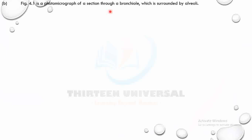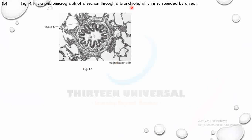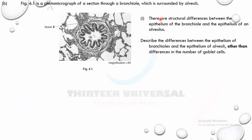Figure 4.1 is a photomicrograph of a section through a bronchiole with alveoli. You can see the bronchiole here with ciliated epithelium — the lumen is visible, the epithelium is folded, and there are loose tissues and mucus glands at the next layer. Structure X is visible in the wall of the bronchiole. Note that the bronchiole does not have cartilage.